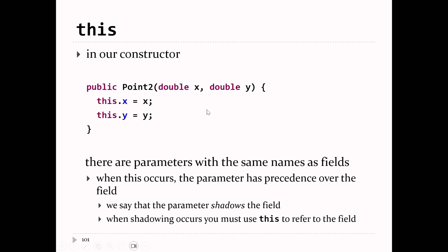This is actually quite common in Java — it's common to see a constructor or method where parameter names have the same name as a field. It's so common that it has a special term: when a parameter has the same name as a field, we say the parameter shadows the field. Whenever you have shadowing, you have to use this to disambiguate — do you mean the field or do you mean the parameter?